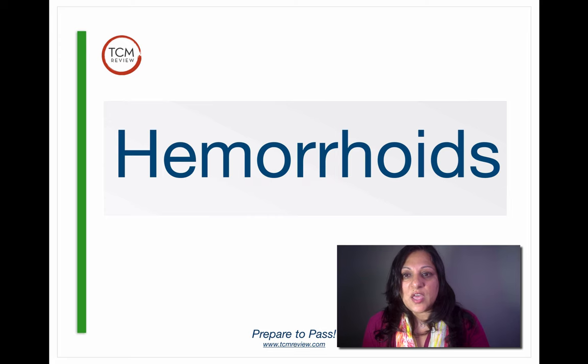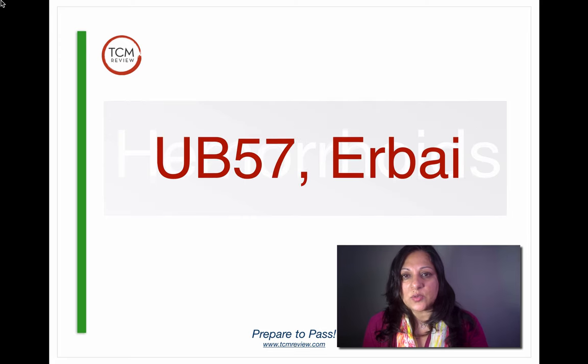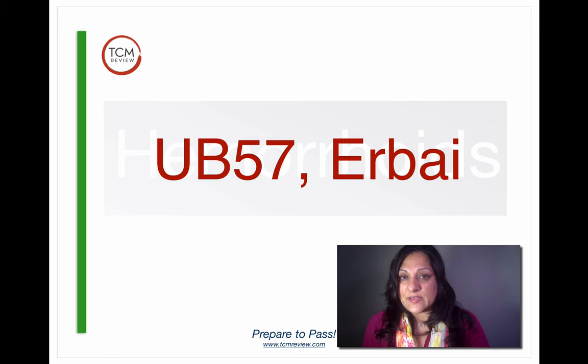Next we have hemorrhoids, and hemorrhoids are best treated with UB57 and also the extra point Bi Zhong.